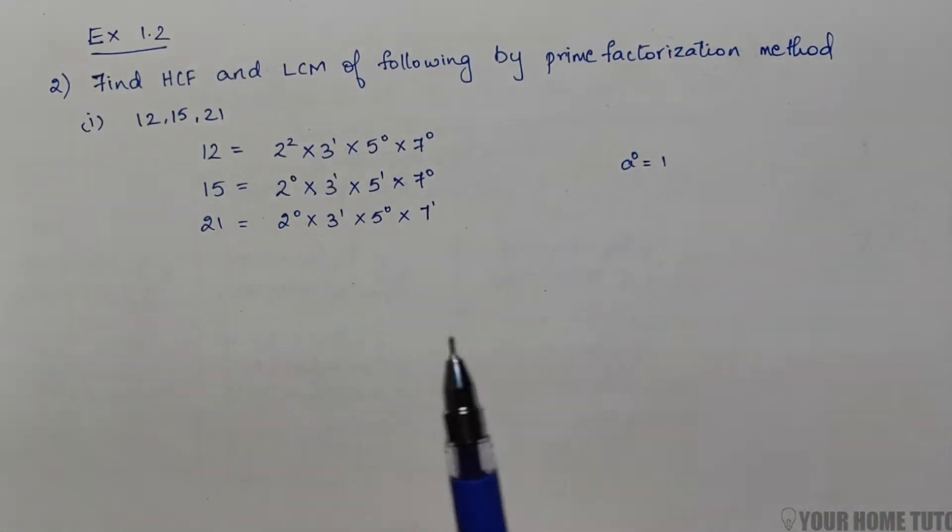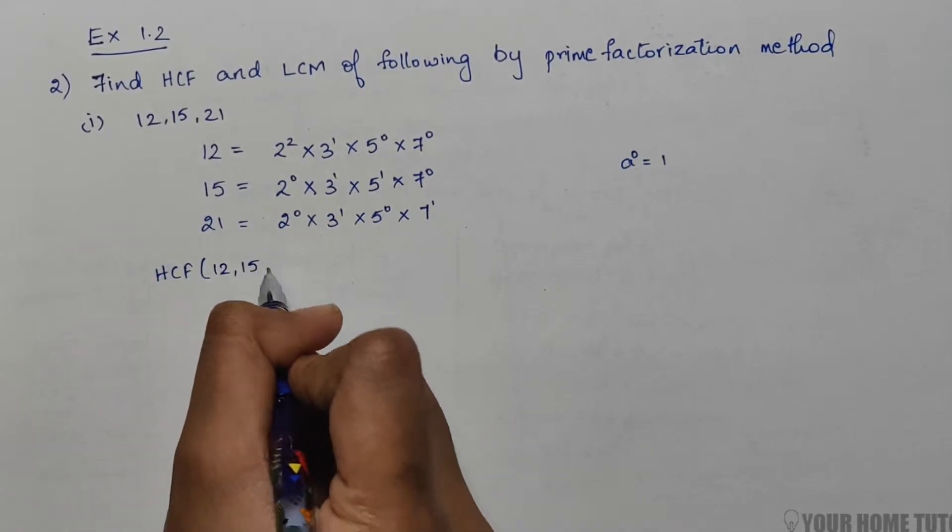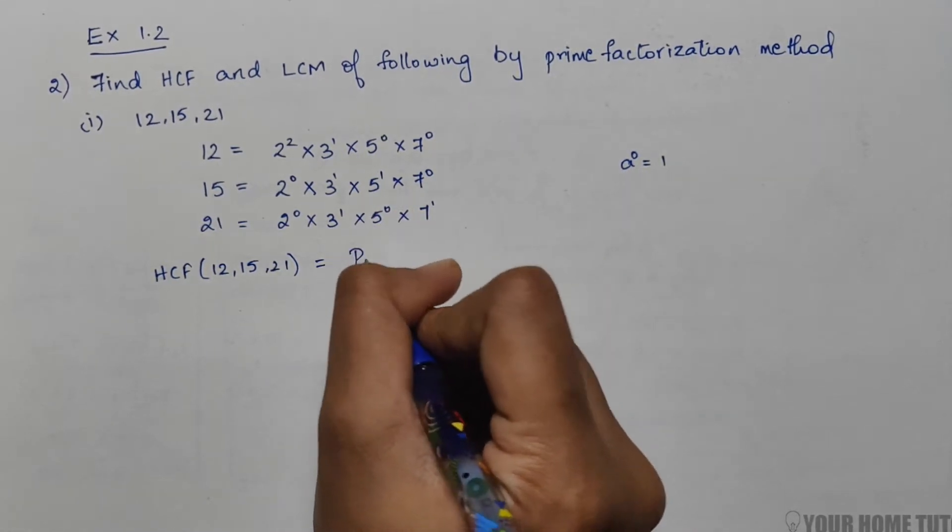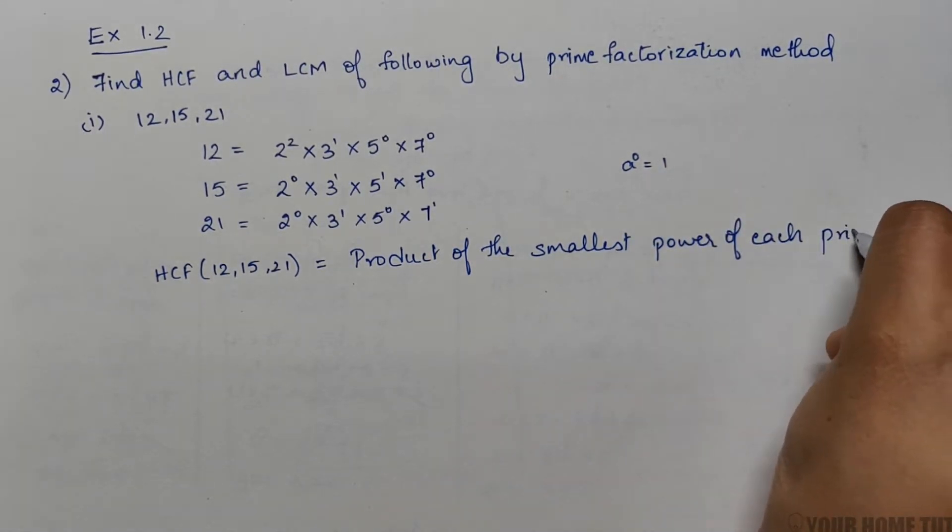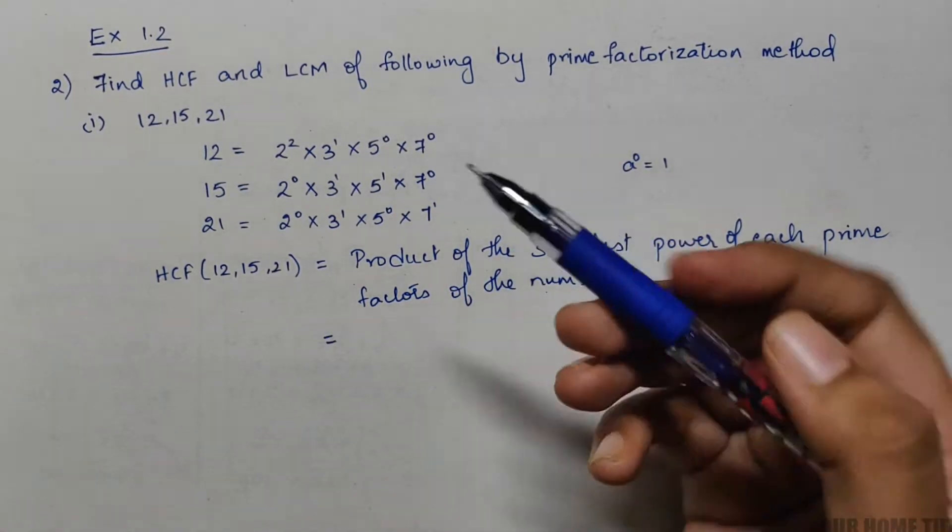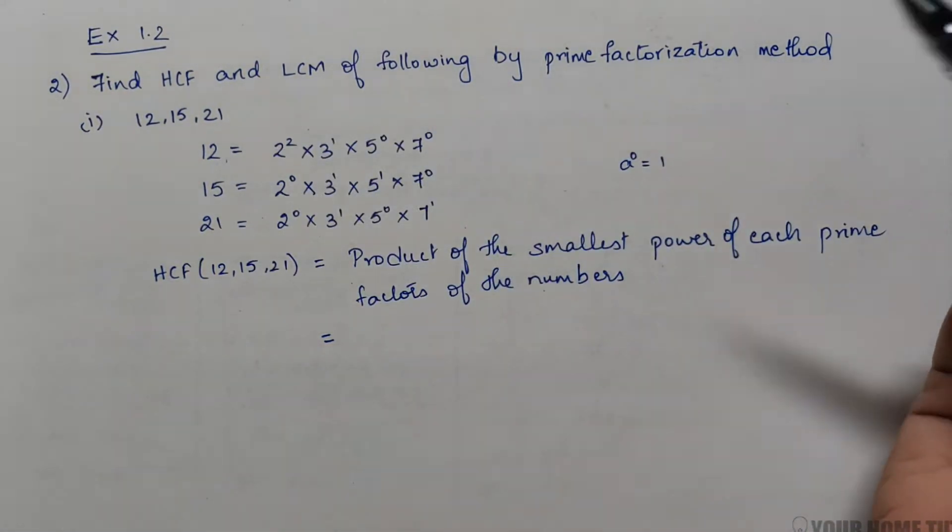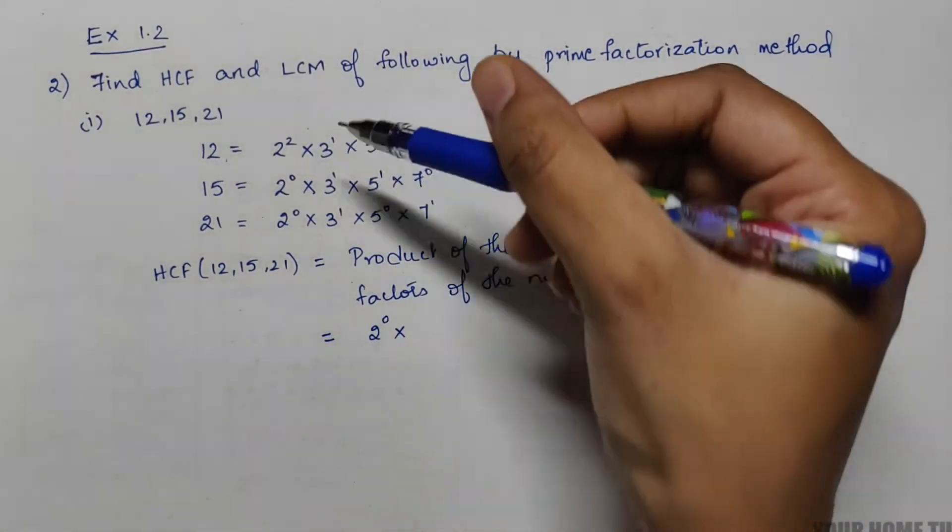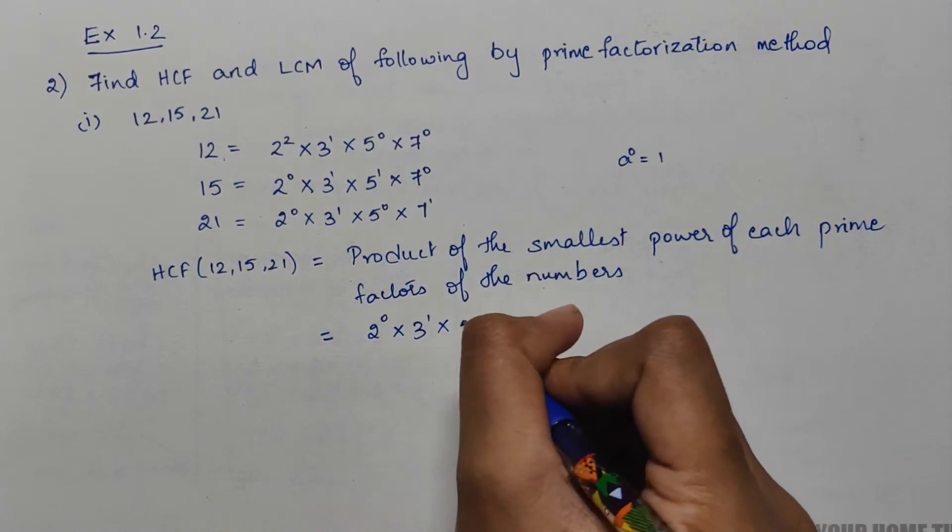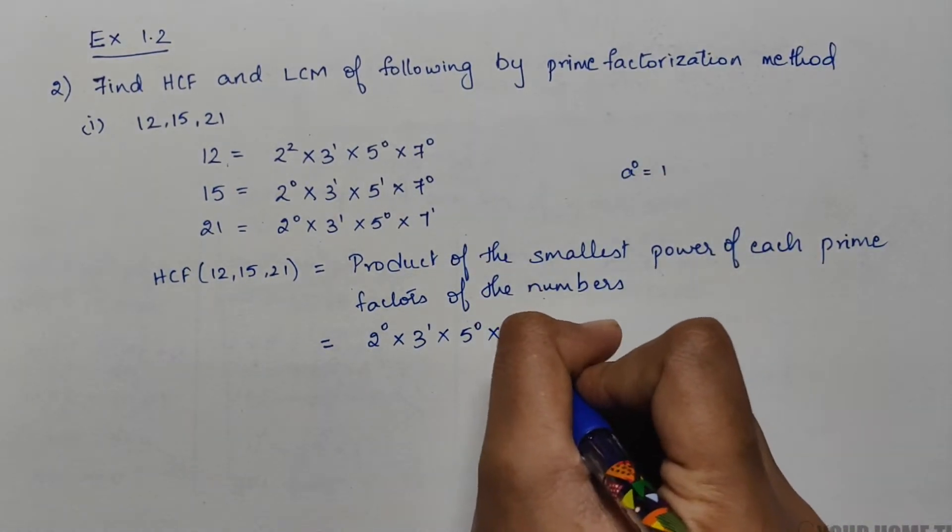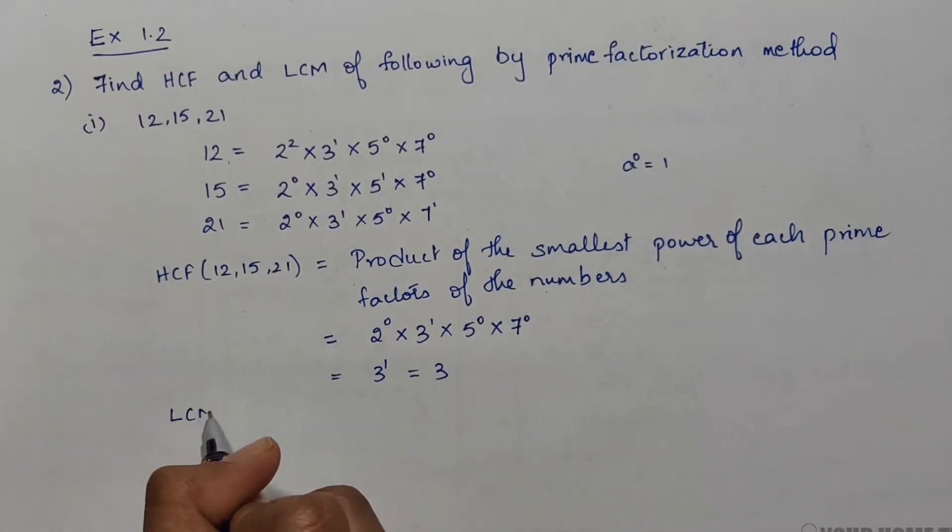Now for HCF of 12, 15, and 21, it is nothing but the product of the smallest power of each prime factor of the numbers. If you see out of all three, 2⁰ is the smallest power, so I will write it as 2⁰. Here 3¹ is the smallest power. And here 5⁰ is the smallest power, and 7⁰. So our HCF here is 3¹ or simply 3.